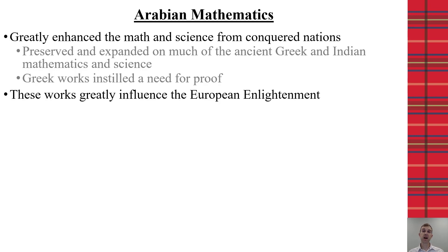The work done by the Arabian mathematicians also greatly influenced the European Enlightenment several hundred years later. Much of the work we think of as being done during the Enlightenment was likely adapted from works actually completed by Arabian mathematicians hundreds of years before.